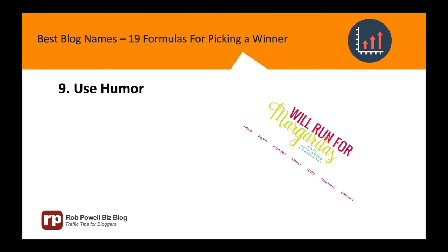Formula 9: Use humor. Humor is a way to make an immediate connection with people. So if you can make your blog name humorous, you're off to a good start. Here are some examples: We'll Run for Margaritas.